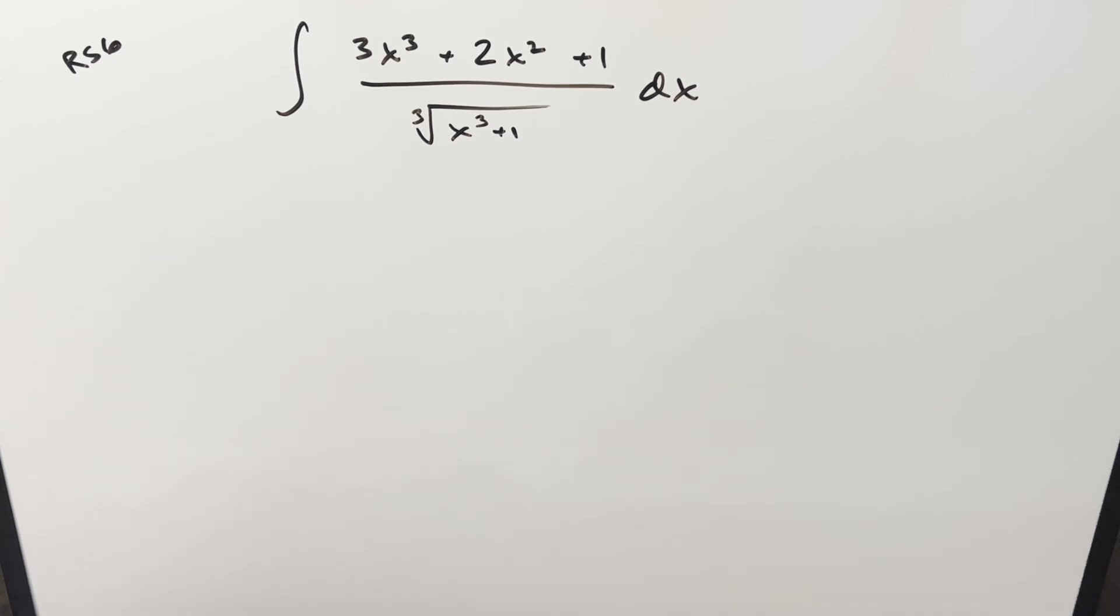Okay, this one was interesting just because it's clear to me that I need to do some algebra because I can't just do a u substitution. The derivative of this is going to be 3x squared, and that's not what we have in the numerator.